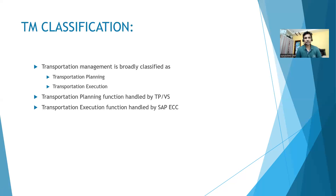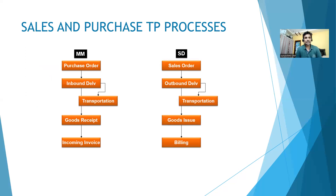Now let's get into the sales and purchase transportation planning and execution process. On the SD side, you create a sales order, then create an outbound delivery, and then do the transportation planning and execution using that outbound delivery. You create a sales order with VA01, outbound delivery with VL01N, and normally you would click Post Goods Issue. But in transportation, at the time of creating and saving the outbound delivery, you do not click Post Goods Issue yet.